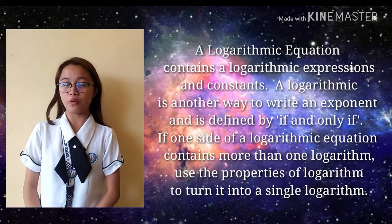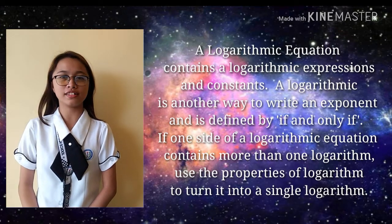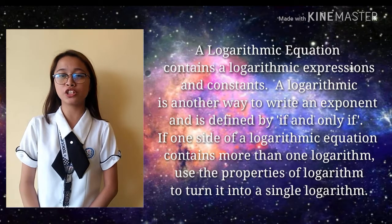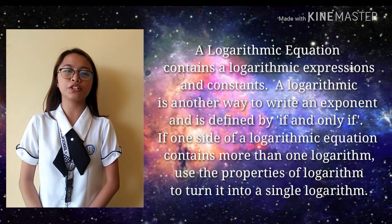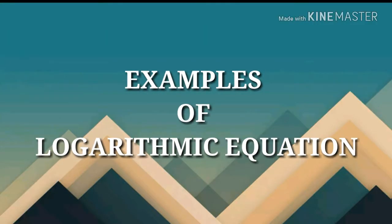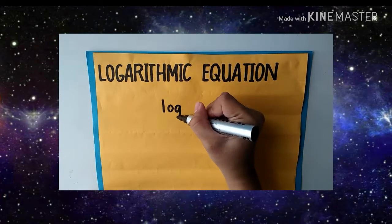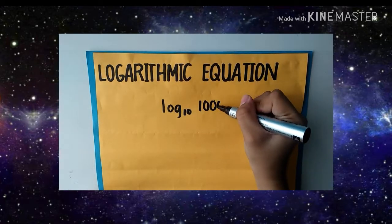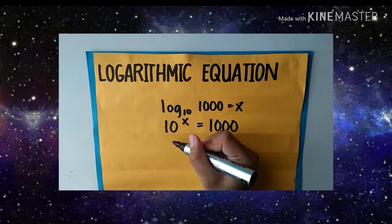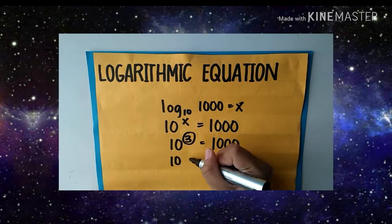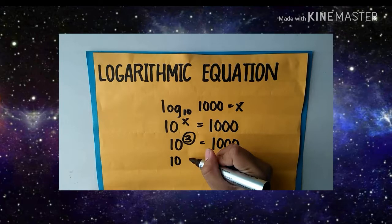The first one will be the logarithmic equation. A logarithmic equation contains logarithmic expressions and constants. A logarithm is another way to write an exponent, defined by if and only if. If one side contains more than one logarithm, use properties of logarithms to simplify it. For example: the logarithm of 1000 with base 10 equals x. We use 10 as the base and x as the exponent, then find the exponent equal to 1000. The exponent is 3, because 10 to the power of 3 — 10 multiplied 3 times by itself — equals 1000. It's easy, right? And that's all for the logarithmic equation.